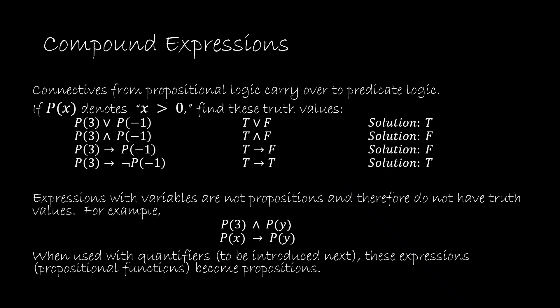It's important to understand that everything we've learned about connectives and propositional logic also carries over to predicate logic. Things get a little more complicated because now instead of just p or q, I have p(3) or p(-1). So instead of just a simple proposition or compound proposition, I now have a propositional function from predicate logic. p(3) tells us — if p(x) denotes x is greater than 0 — that 3 is greater than 0, which is true. And p(-1) would be negative 1 is greater than 0, which is false. Using the or connective: true or false is true.